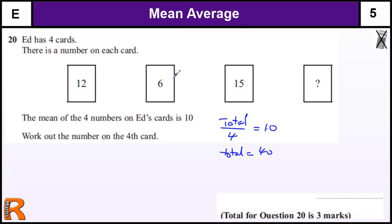So we've got 12, 6, and 15. 12 and 6 makes 18, plus 15, or plus 10 is 28, plus another 5 is 33. So these three total to 33, so that means the last card must be 40 minus 33, which is 7. So it's 7 for the last card.